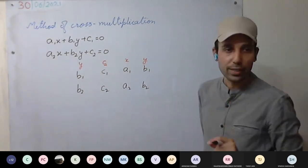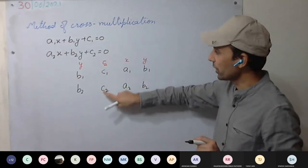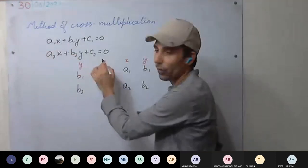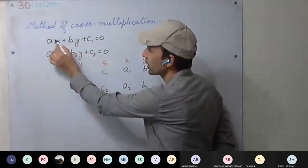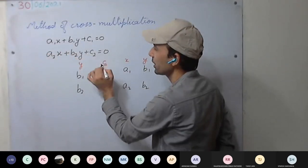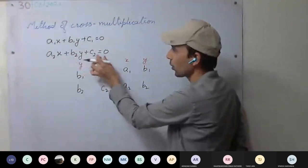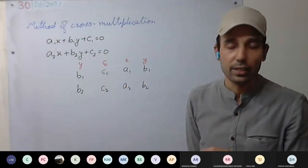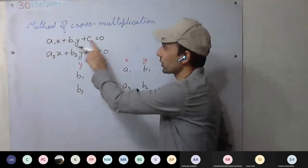So we are solving the simultaneous equation using the method of cross multiplication. First we write the equation in standard form — the x term first, then the y term, then the constant term equal to zero. If any equation is not given in this form, we convert it to this form first.